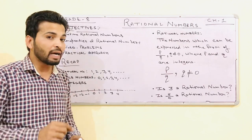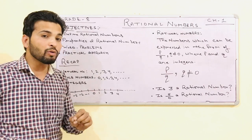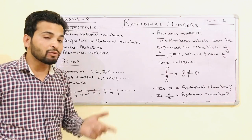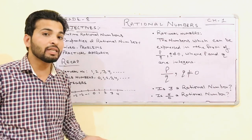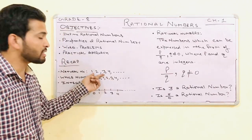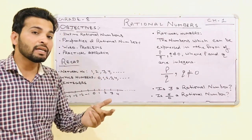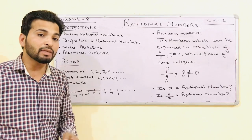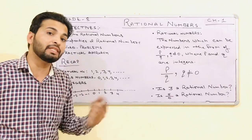Let me ask one question: is 0 a natural number? Obviously no, because natural numbers start from 1 only. Is 1 a natural number? Yes. Is 1 a whole number? Yes.